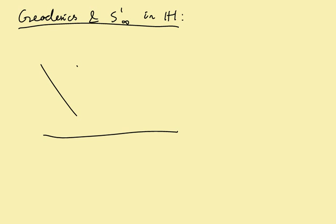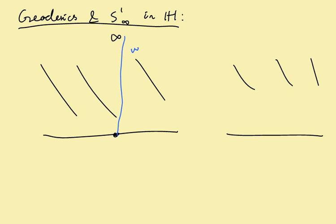So, geodesics and S¹ infinity in H, here is another situation. What happens in the hyperbolic plane? Here we have again two cases. One of them is if I take a point here and I take infinity. Well, in that case, you can immediately guess that the geodesic in question is the vertical line.